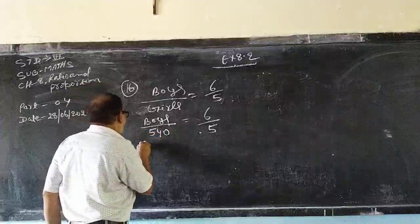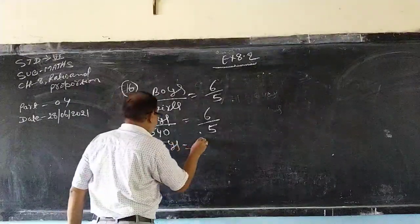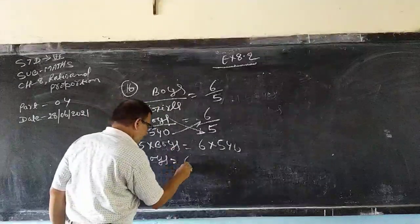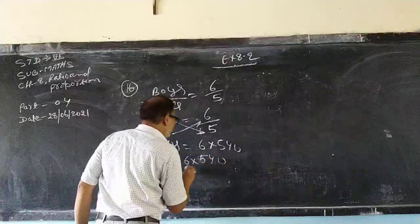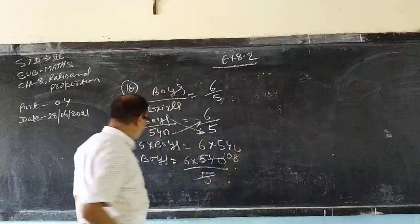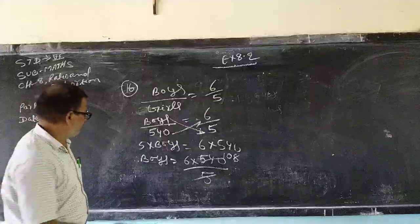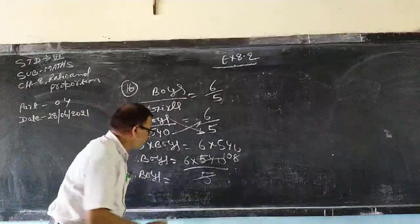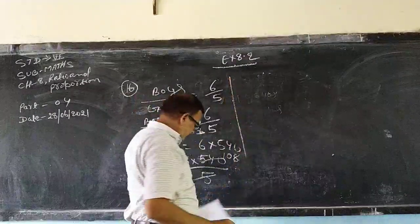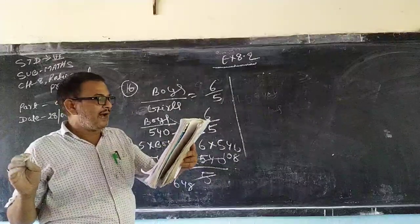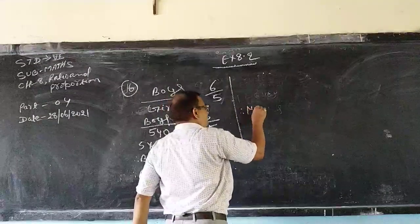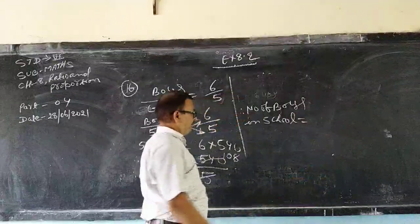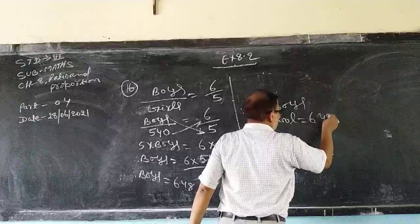No problem, you can take X. 5 into boys is equal to 6 into 540 by cross multiplication. Therefore boys, divide by 5, 108 into 6. What will they write? 108 times 6, 648. The question is how many boys are there in the school? Number of boys in the school, how many is there? 648. This is your answer.